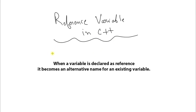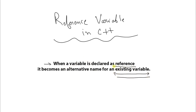Hello there, this is Rupesh and you are watching CppNuts video series on C++ and this video is about reference variables in C++. So reference variables are not there in C, they are in C++. What is the meaning of a reference variable? It means that when a variable is declared as reference, it becomes an alternative name for an existing variable. In order to create a reference variable, you must first have some existing variable which it will refer.